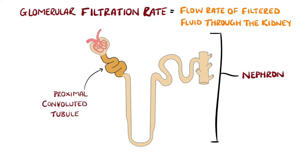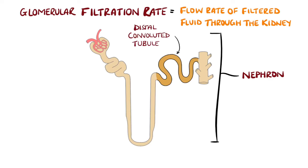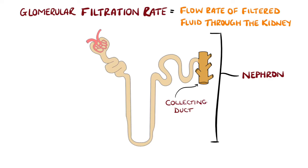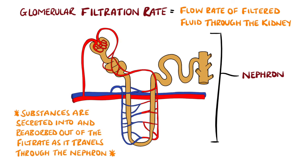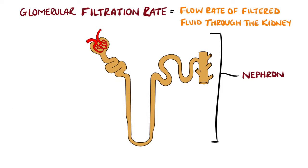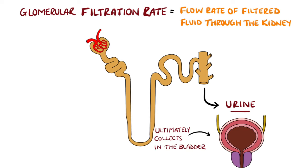The filtrate passes along through the proximal convoluted tubule, loop of Henle, distal convoluted tubule, and the distal collecting duct, undergoing secretion and reabsorption as it travels. Ultimately, it forms urine and collects into the renal pelvis and passes into the bladder through the ureter.